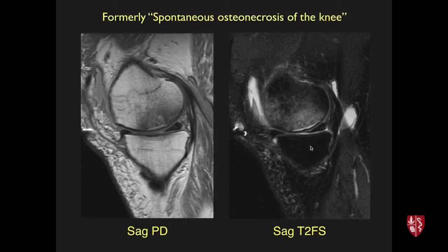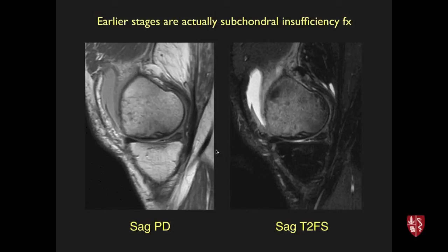Around the knee, we used to call this spontaneous osteonecrosis, with low signal on T1 and PD images and bright signal on T2, along with subchondral fluid and subchondral collapse that, if biopsied, could show osteonecrosis. What we now realize is that this typically starts out as a subchondral insufficiency fracture. In a different patient with a degenerated and torn meniscus, there is extensive marrow edema and serpentine subchondral fracture lines. If this patient isn't treated with non-weight-bearing and careful follow-up, it could progress to an appearance that looks like subchondral osteonecrosis.